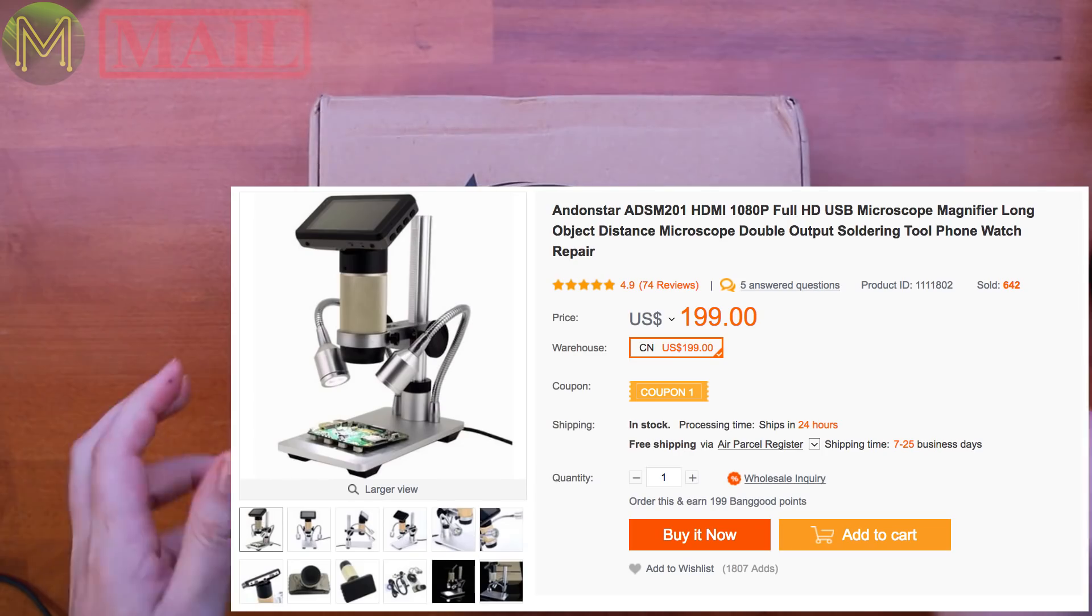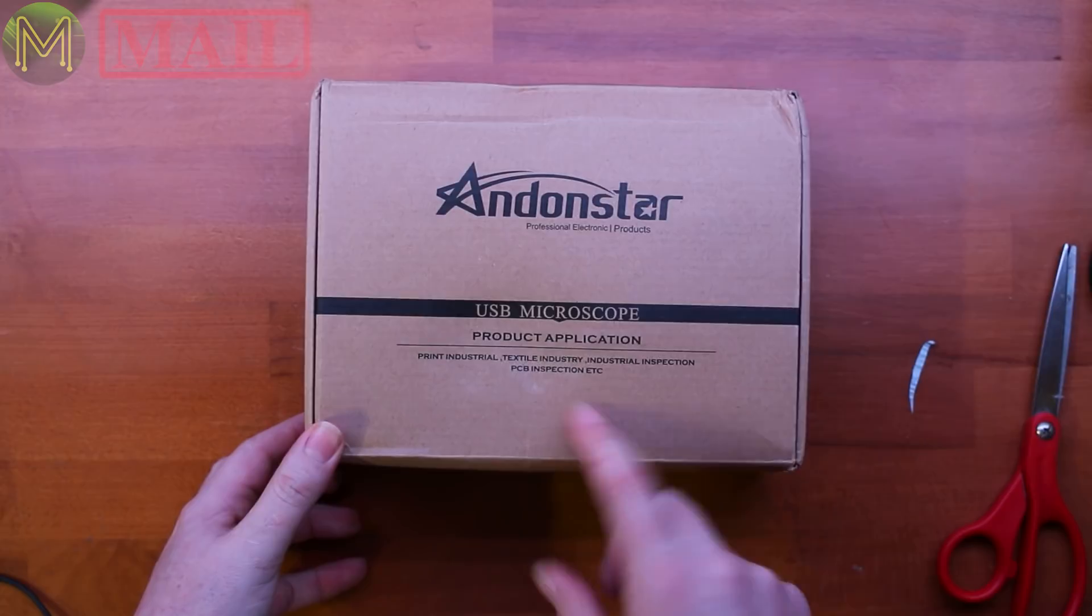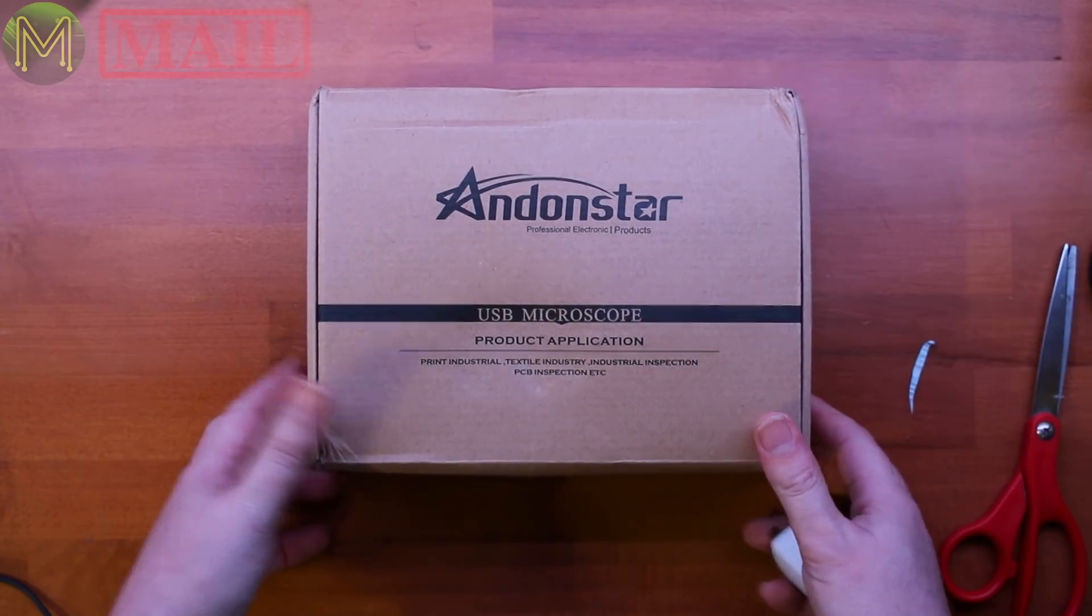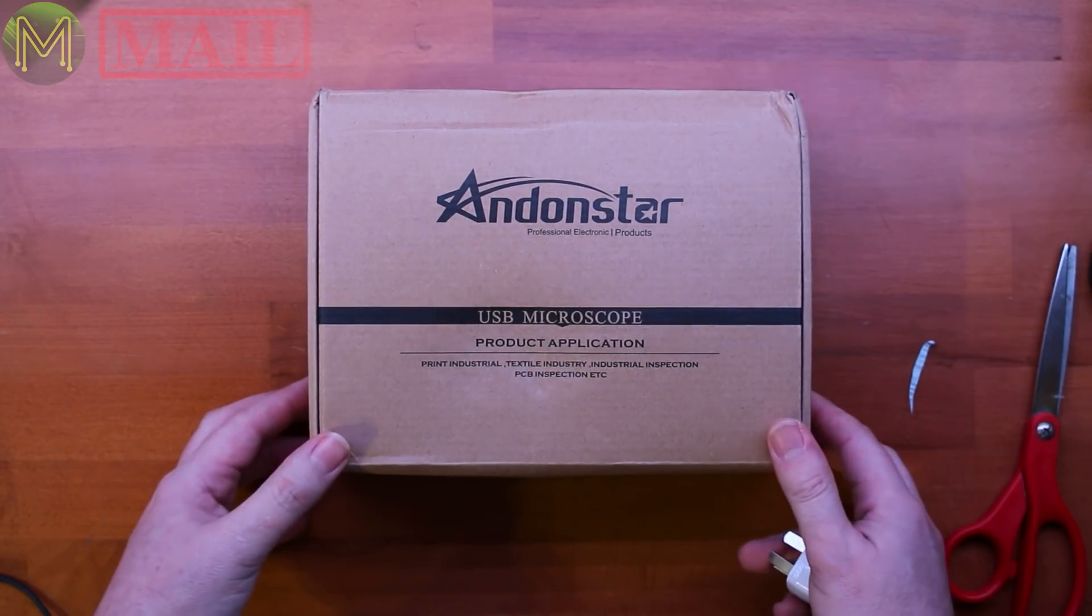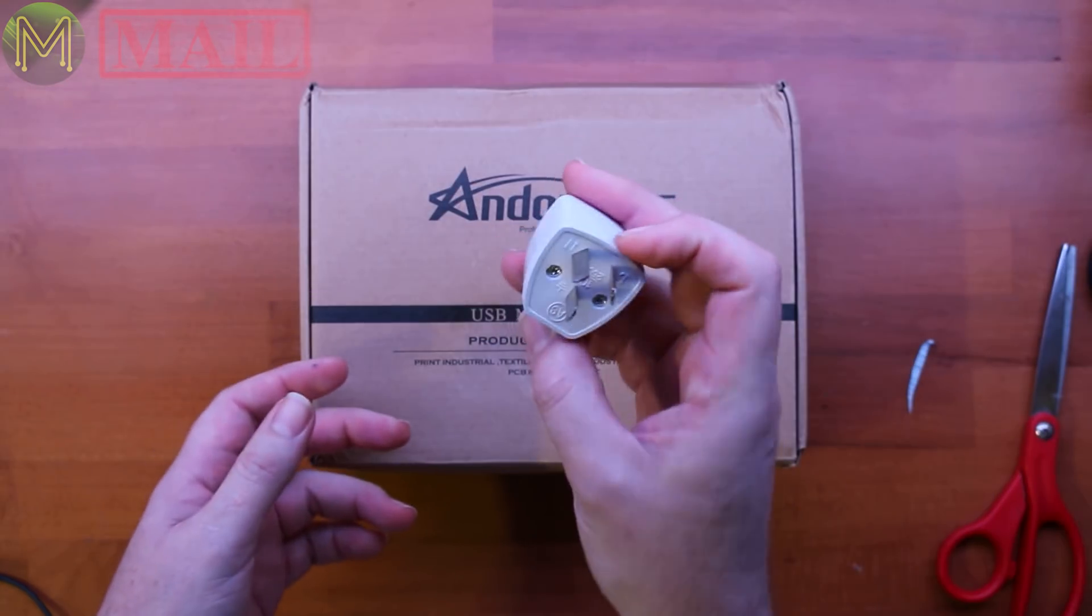So this is the Addon Star Microscope. It's actually an HDMI microscope and the reason why I wanted to get one is because I'm doing a lot more SMD work these days and in a lot of my reviews there's a lot of detailed photos that I'll be able to take. So this came from Banggood and they sent me a power adapter which is nice.